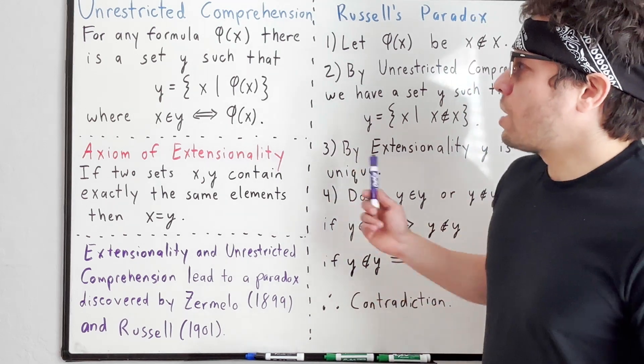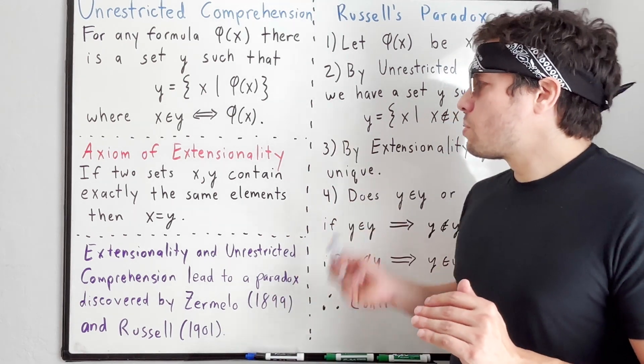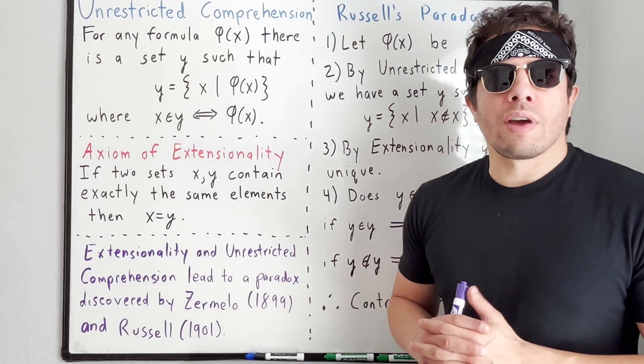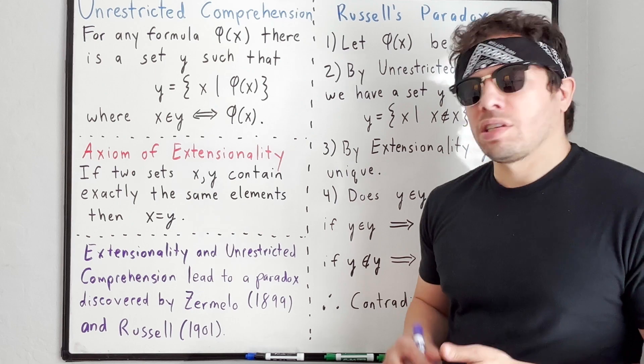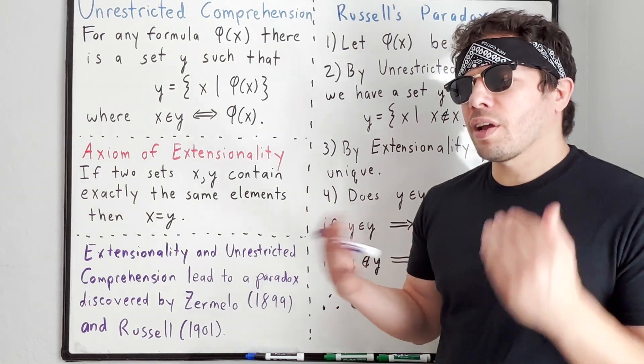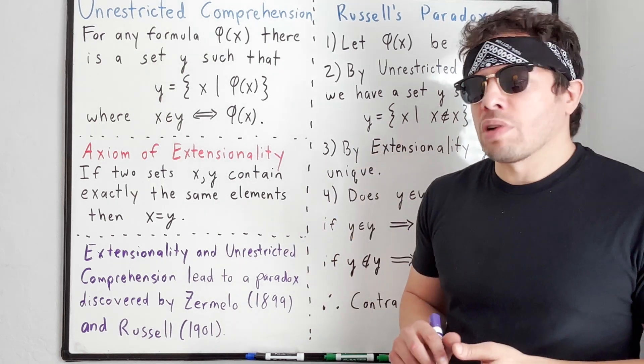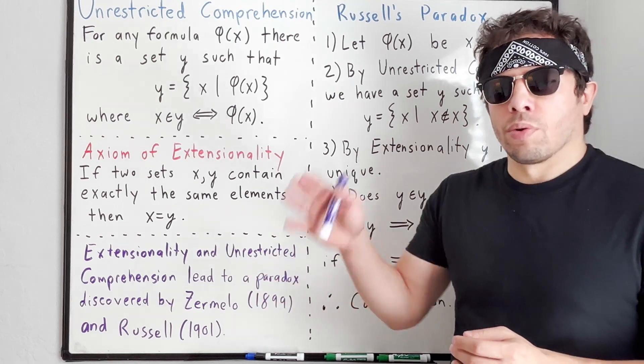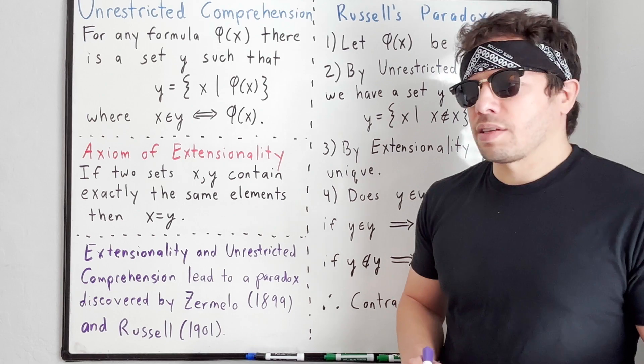I figured we'd start off by deriving Russell's paradox, but I want to note the way we're deriving Russell's paradox here is using sort of a set theoretic type notation. When Russell originally derived his paradox, he was using the system of Frege. Frege's system is notoriously complicated and hard to wrap your head around.